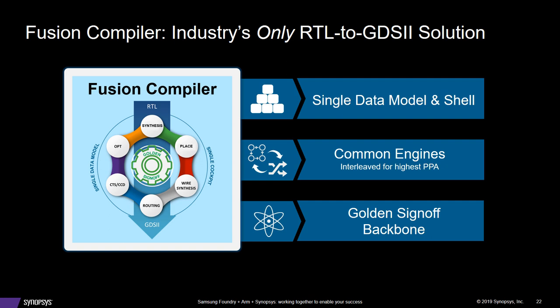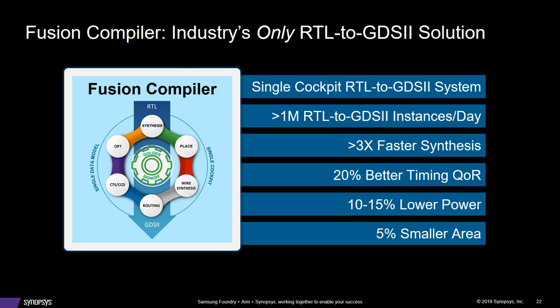Some high-level advantages of Fusion Compiler's single data model: synthesis and place-and-route are now using the same data model, common engines throughout the flow. Synthesis and place-and-route are using the same timer and the same extractor, giving you consistency throughout the flow and convergence. It's all based on the golden sign-off backbone — the timer is based off of Primetime. That consistency and convergence results in benefits: faster synthesis, better QOR, lower power, and smaller area.